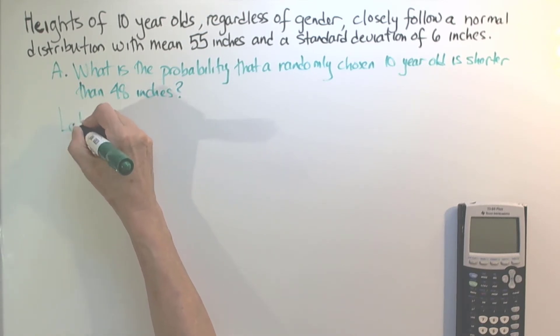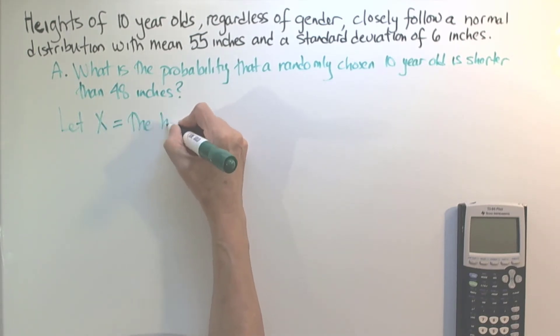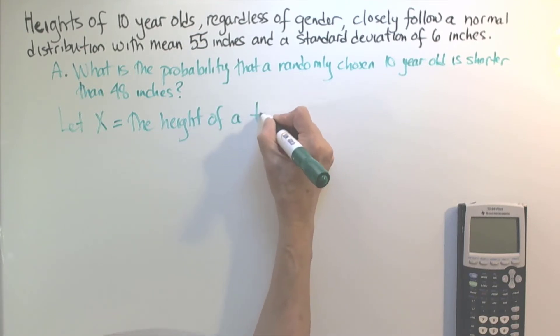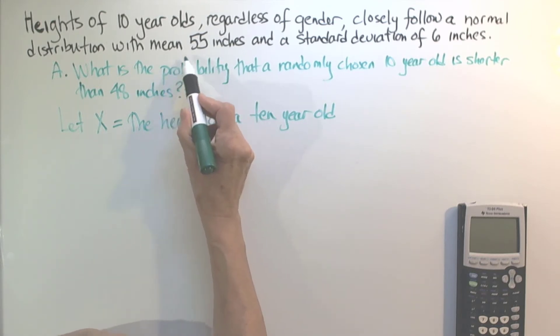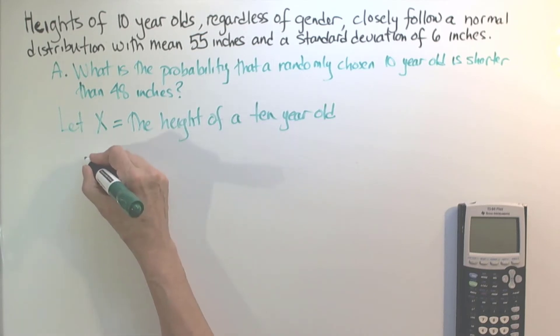So we'll let X be the height of a 10 year old. In this case, we're given that the mean is 55 inches. So we'll use the notation for the mean and say that μ is 55 inches.